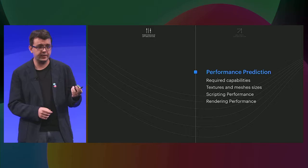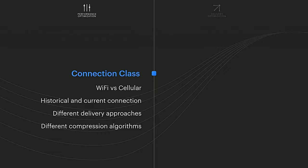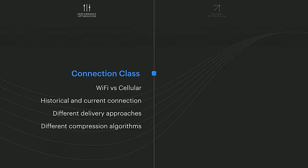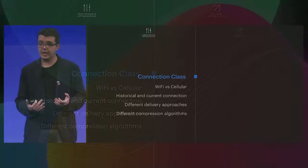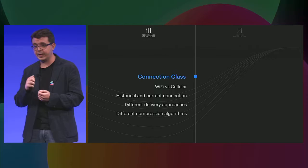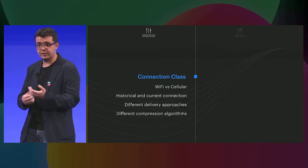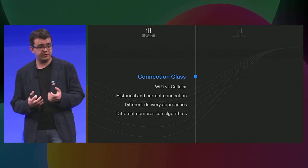Next, connection class. What do we mean by connection class? Connection class is a theoretical class that we assign to a device in its current context and position — say, whether you're using a Wi-Fi connection or cellular. On top of that, we're also going to take historical and current stability and historical and current speed into account. Knowing all of that information ahead of time allows us to pick the best delivery approach — say, picking a faster compression rate that is faster to uncompress, or a more advanced one that is slower to uncompress if it's a high-end phone.